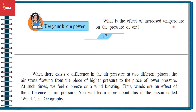What is the effect of increased temperature on the pressure of air? When there exists a difference in the air pressure at two different places, the air starts flowing from the place of higher pressure to the place of lower pressure.